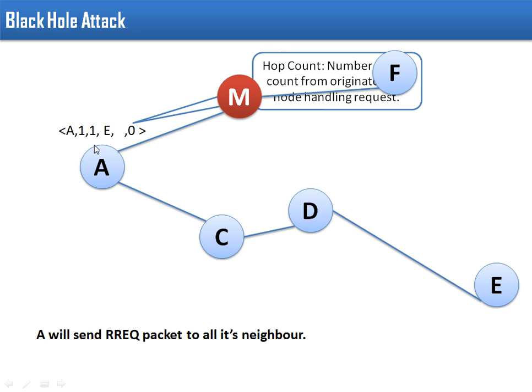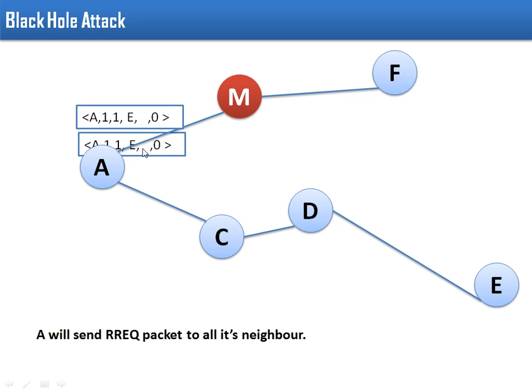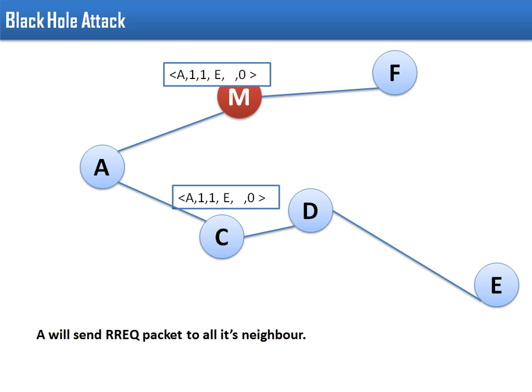Hop count is from the current node to the originator. So initially this packet is starting from A, so that's why this is 0. So A will broadcast the route request packet, and these packets are received by M and C.